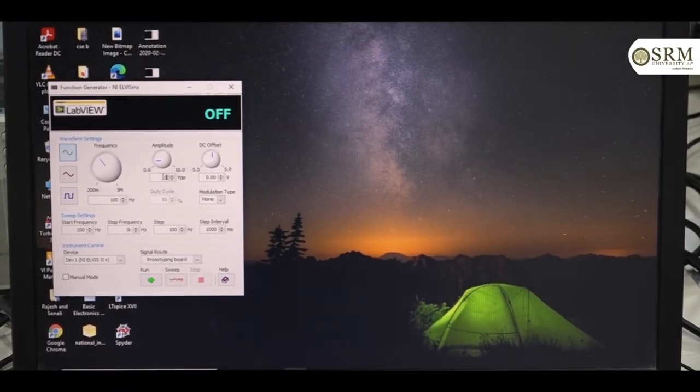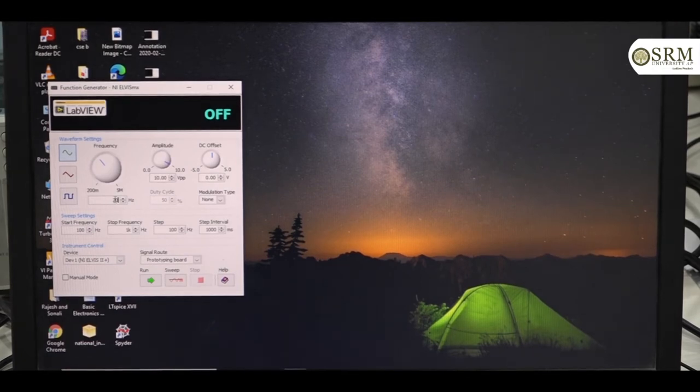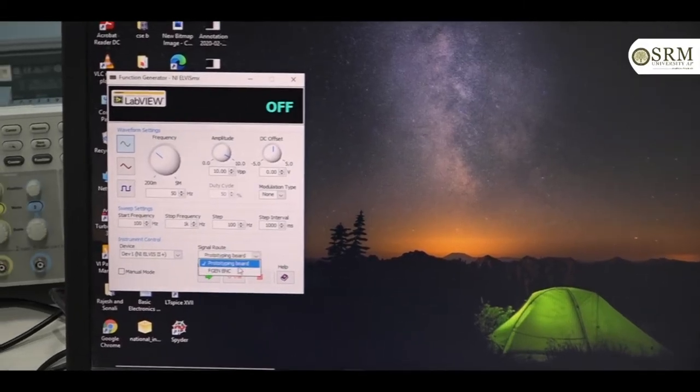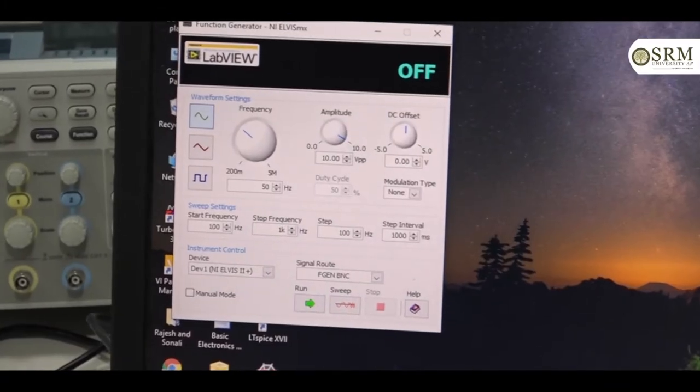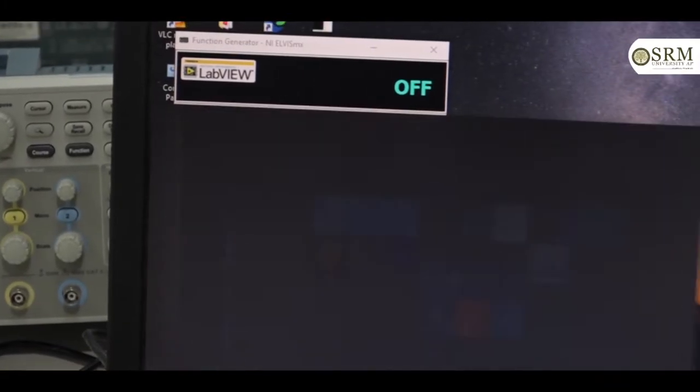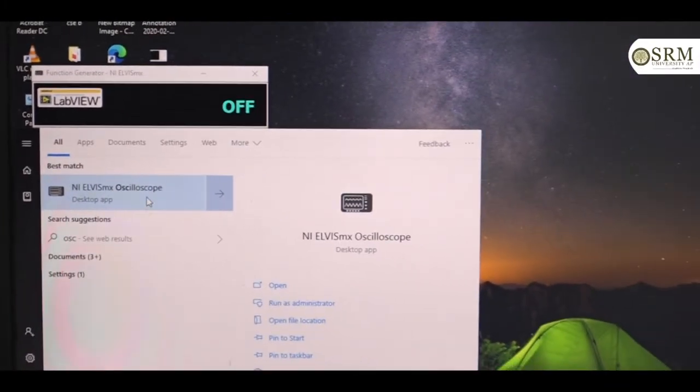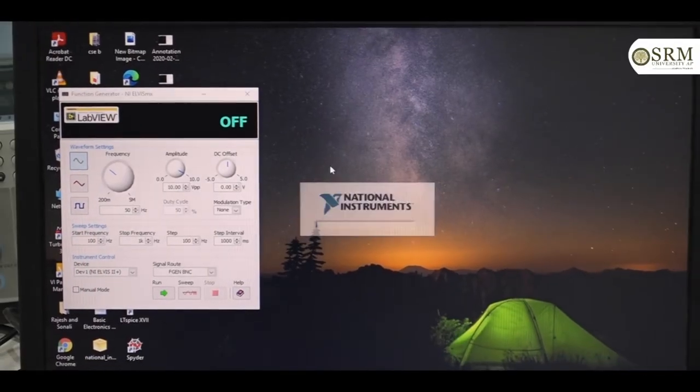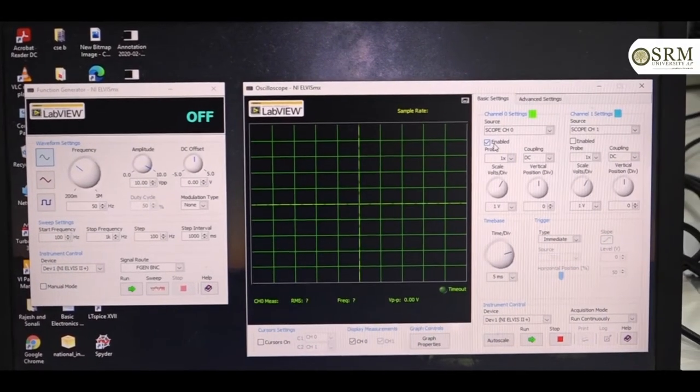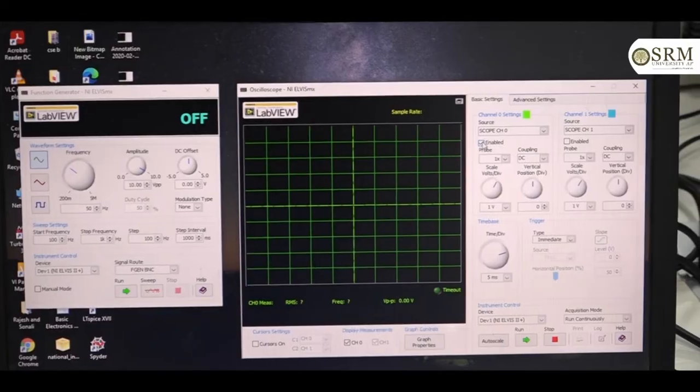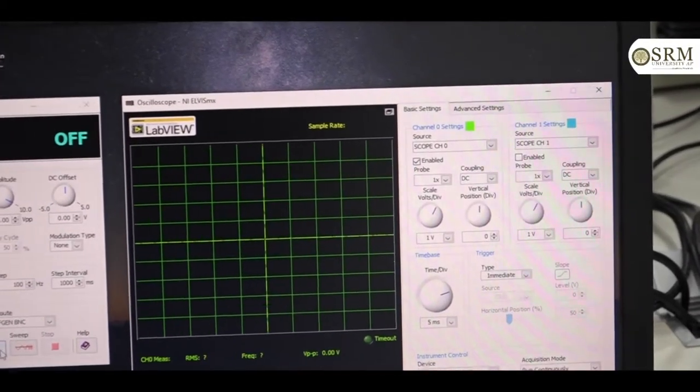the peak to peak voltage is 10 volts and the frequency is 50 Hz and this place to F gen B and C. Next we run this.